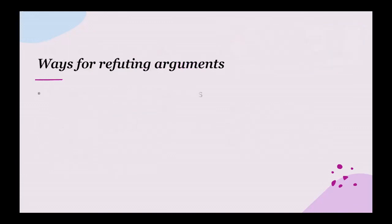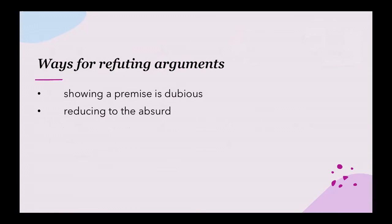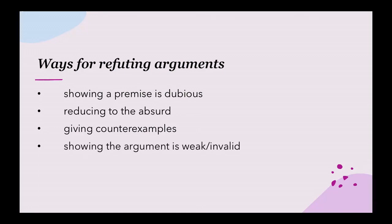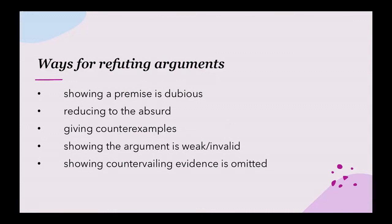To refute an argument, we can use one of the following ways: show a premise is dubious or false; reduce to the absurd by breaking the claim into smaller parts and showing those parts are false; give counter examples by providing an example that proves the conclusion is false; show the argument is weak or invalid by providing cases where premises are true but the conclusion is false; show countervailing evidence omitted by the arguer; or show that there are logical fallacies of irrelevance. Goodbye for now and see you in class for more analysis and questions.